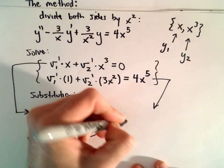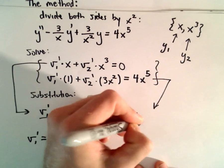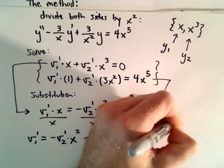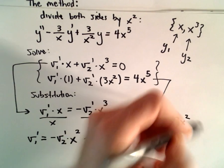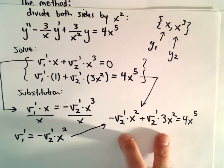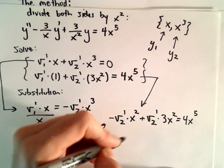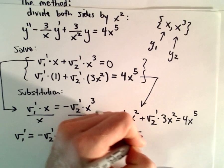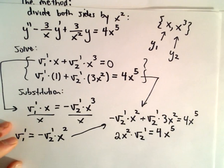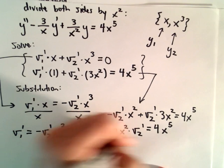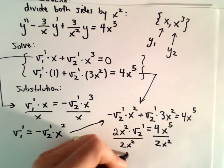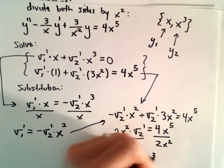Substituting, we get −v₂'·x² + v₂'·3x² = 4x⁵. Combining like terms: (−x² + 3x²)·v₂' = 2x²·v₂' = 4x⁵. Dividing both sides by 2x², we get v₂' = 2x³.